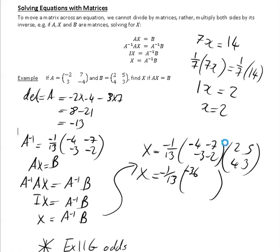You can do that in your calculator. This is my first row, second column. So first row times the second column. So that's -4 times 5 and -7 times 3, which is going to be -41.